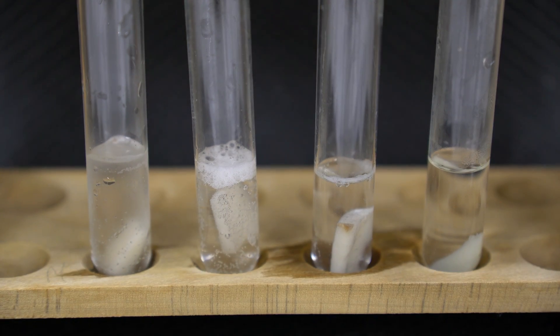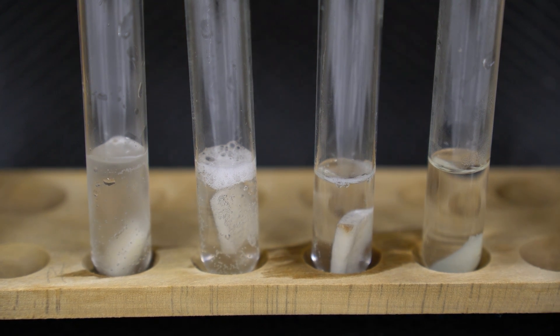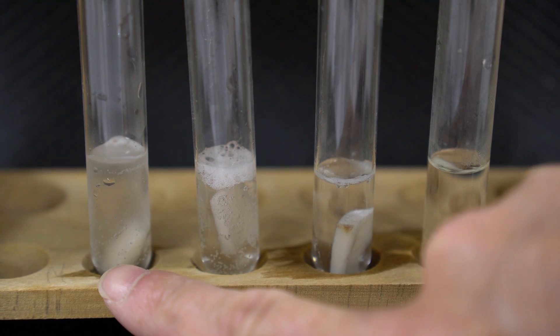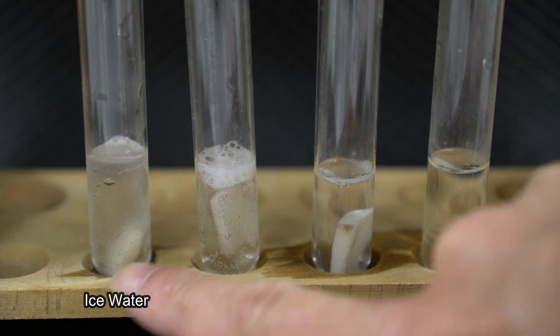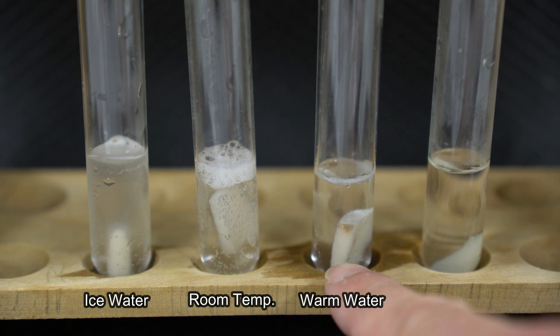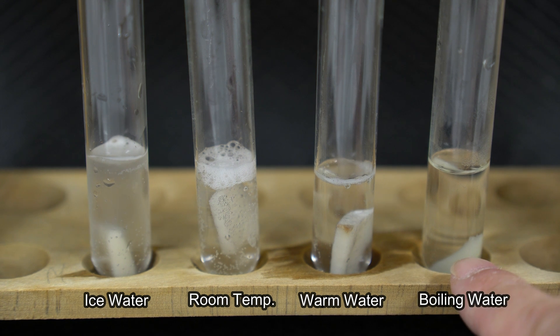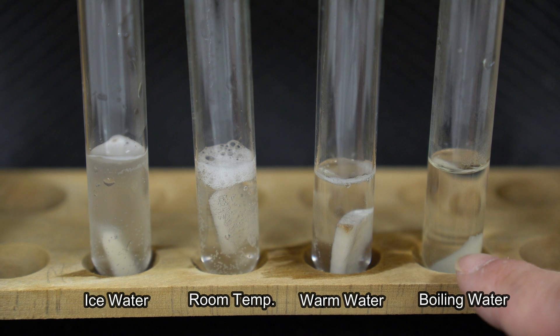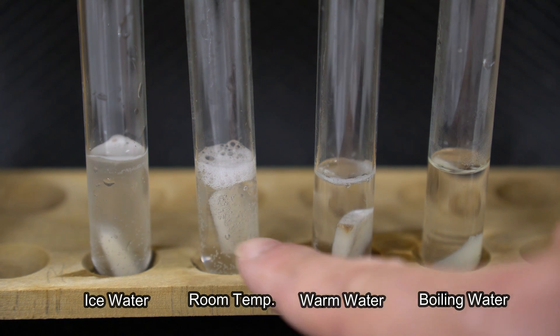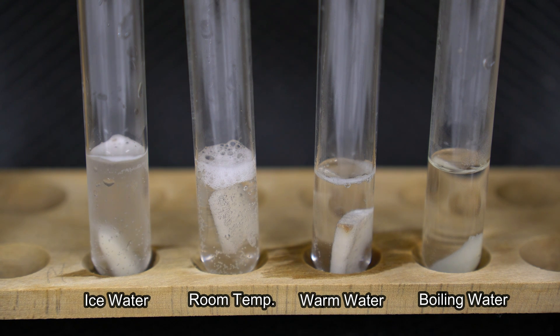Okay, so this shows the difference in temperature that everything was exposed to. Here we have hydrogen peroxide that was chilled in an ice water bath. This hydrogen peroxide was kept at room temperature. This was warmed in the warm water bath. And here the potato was left at boiling. So we have boiled potato, warmed potato, room temperature, and chilled potato with hydrogen peroxide.